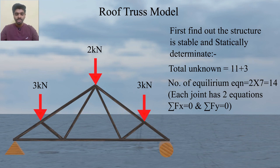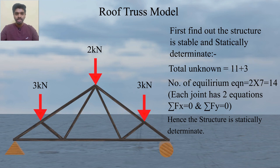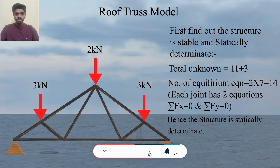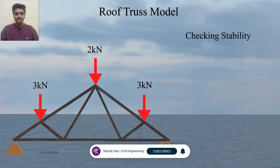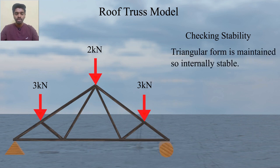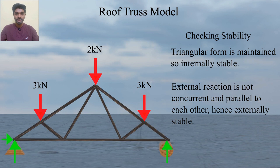Since the total number of unknowns equals the number of equilibrium equations, this structure is statically determinate. The condition m + r = 2j is satisfied, confirming it is also a stable structure. By inspection, the structure forms a basic triangular form, making it internally stable. The external reactions are neither concurrent through one point nor parallel, so it is also externally stable.